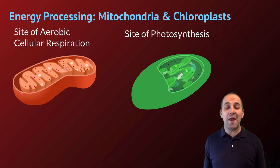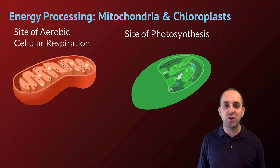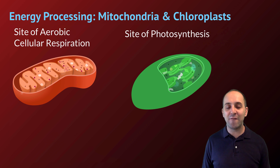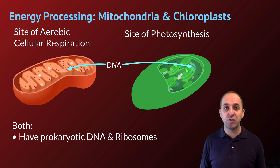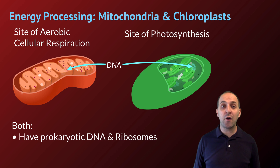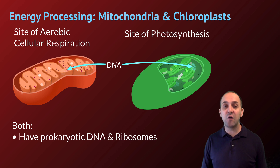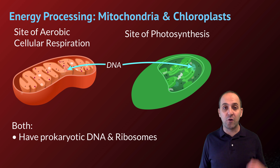Moving from the endomembrane system into energy processing in eukaryotes: energy processing is the domain of mitochondria and chloroplasts. Mitochondria are where aerobic cellular respiration occurs, and chloroplasts are where photosynthesis occurs in eukaryotic cells. Both have remnants of their endosymbiotic origin — they were once free-living prokaryotes engulfed by other prokaryotic cells and evolved into these organelles. They both have prokaryotically structured DNA — one circular chromosome — and ribosomes more similar to prokaryotic ribosomes in subunit size than to the eukaryotic ribosomes in their host cells.